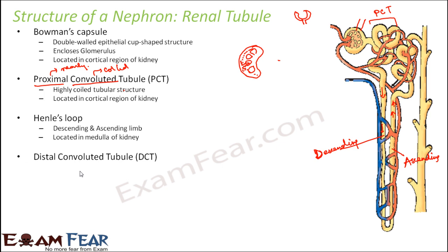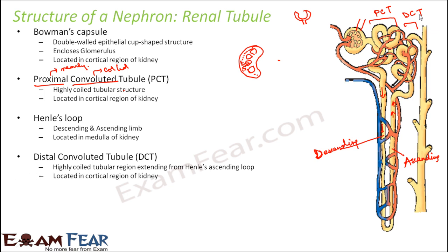Next is the distal convoluted tubule — this is again a highly coiled structure. It extends from Henley's ascending loop, so after Henley's ascending loop, this coiled structure is the distal convoluted tubule. It is located in the cortex region. And now the last one is the collecting duct — it is a straight tubular structure in which multiple DCTs open.